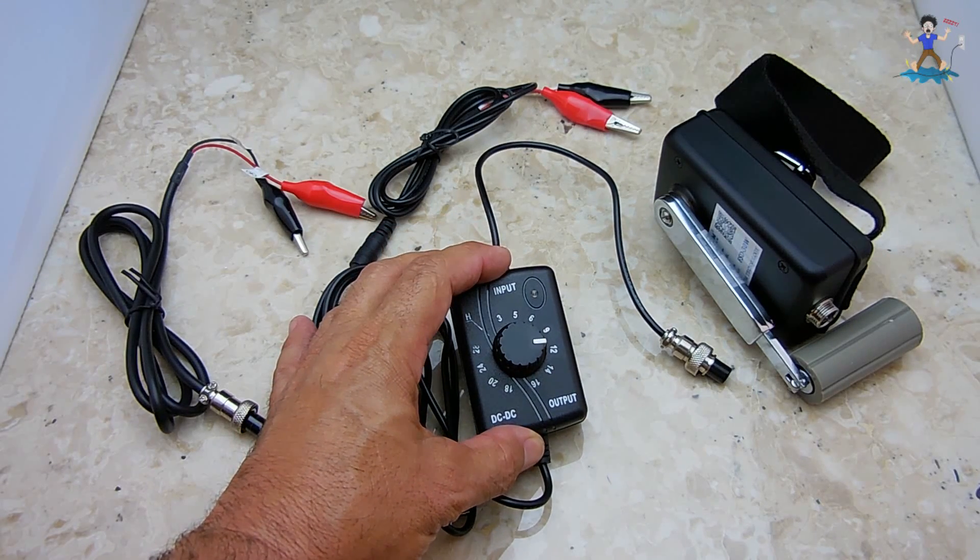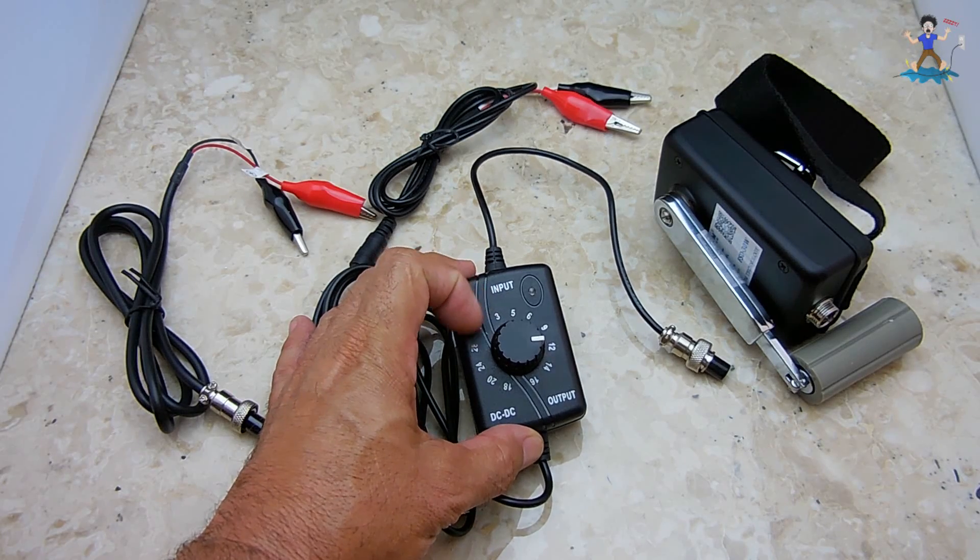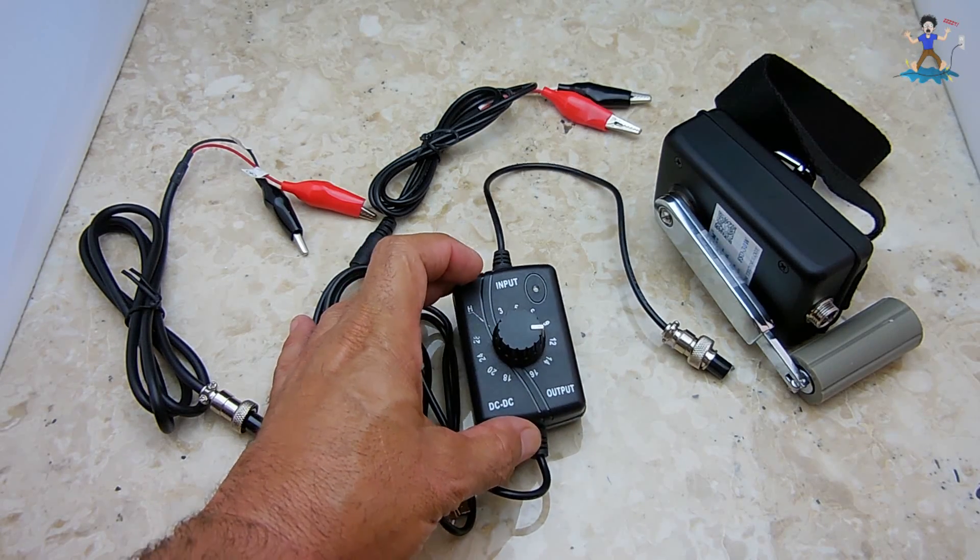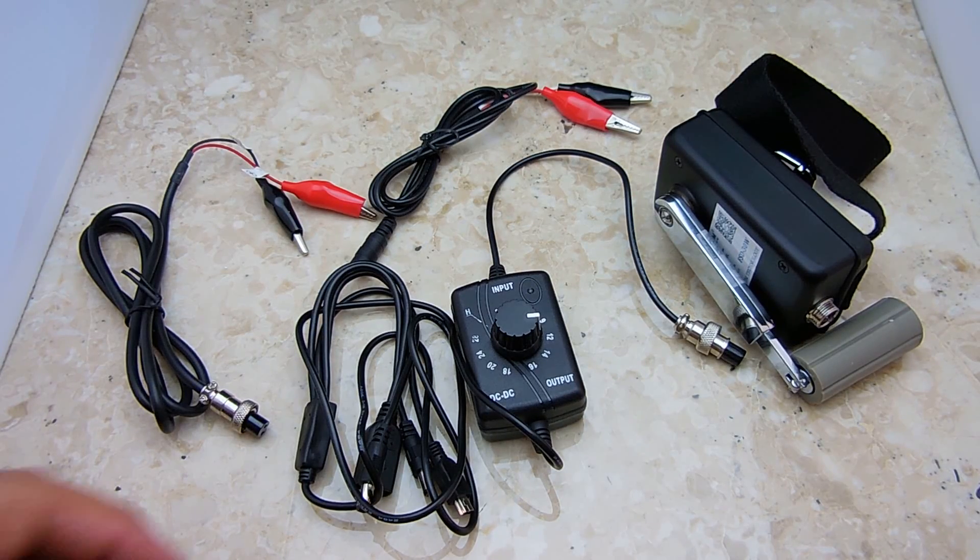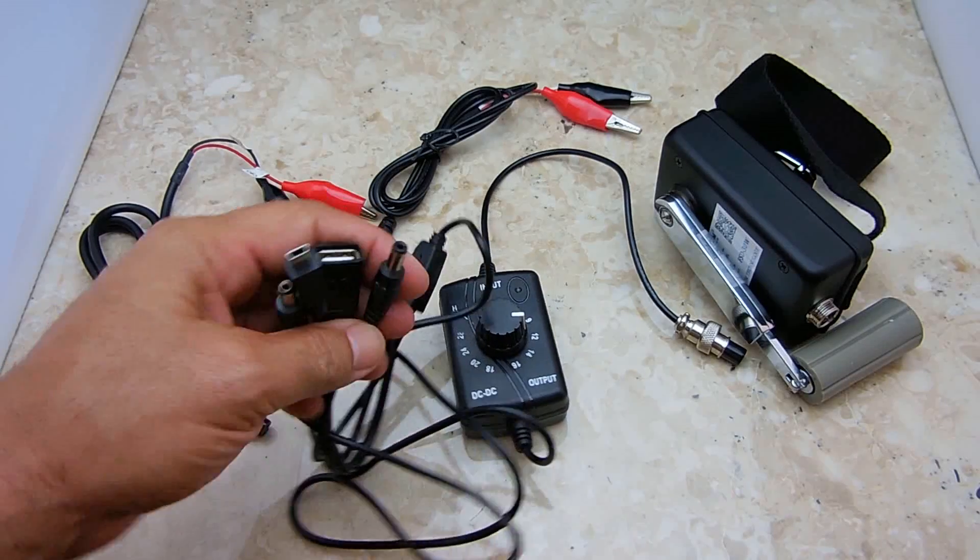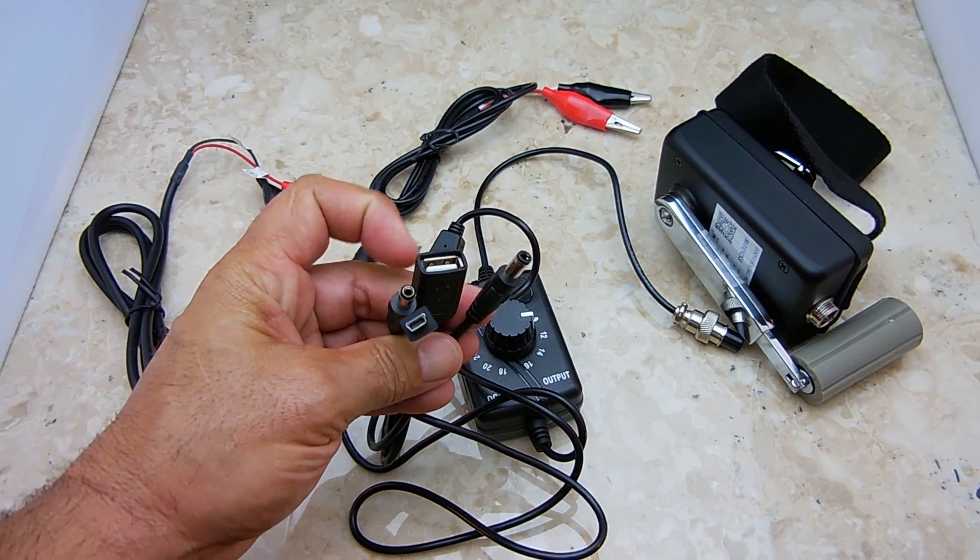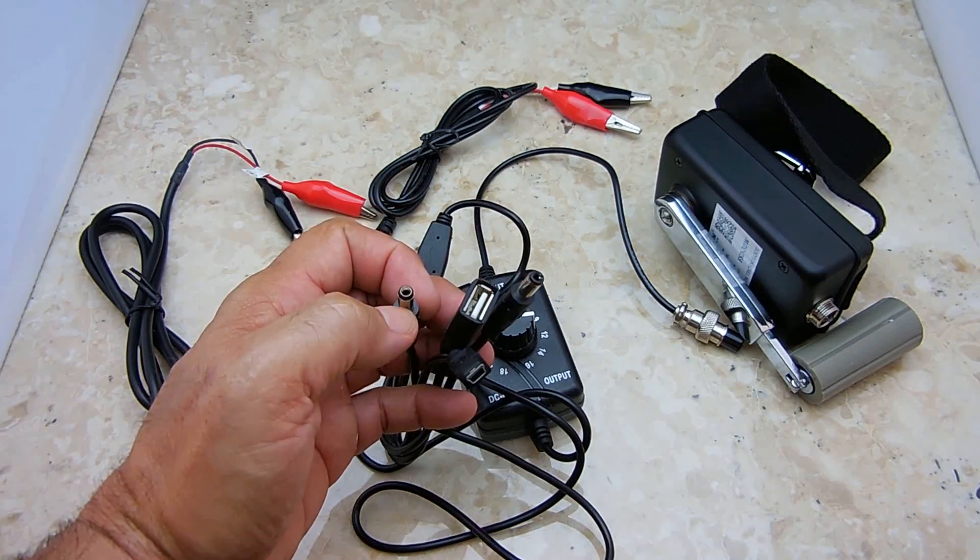Included with the unit, you have this DC to DC switching converter. It goes from 3 volts all the way up to 28 volts at a maximum current output of 3 amps. On that converter, you have a few different connections as you can see right here. You have a USB connection, a mini USB, and you have these two jacks here that are primarily used for 12 volts.